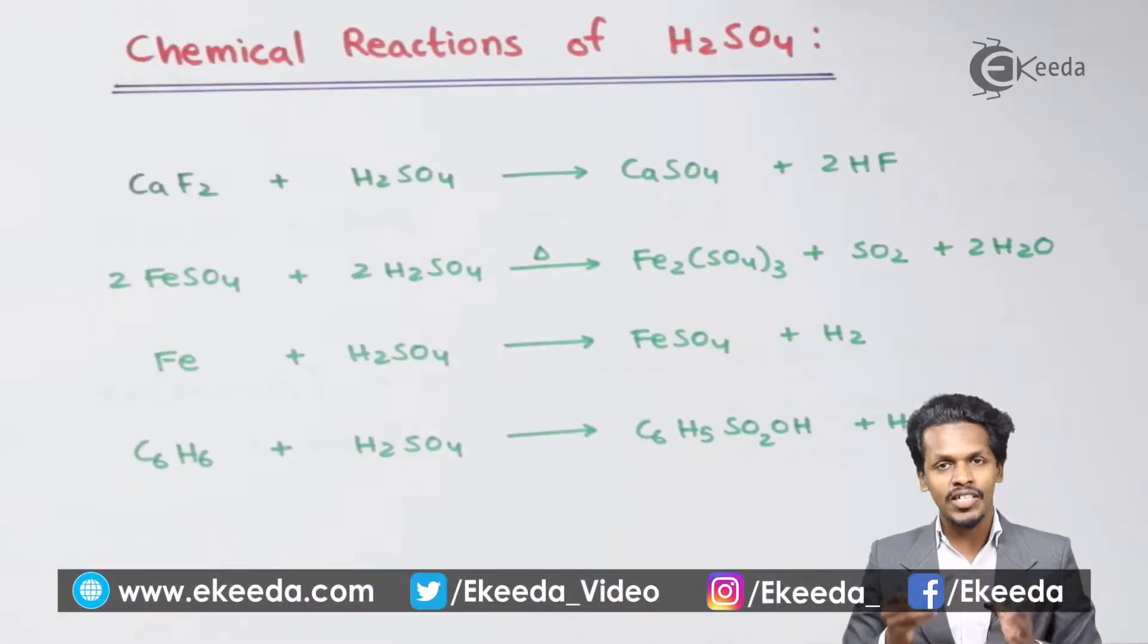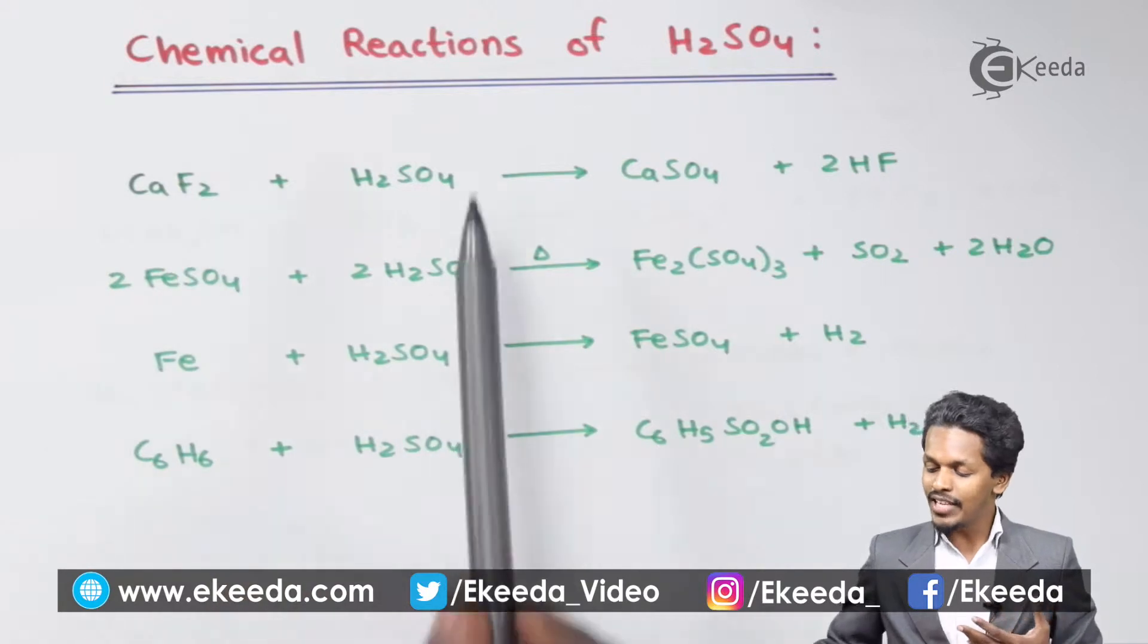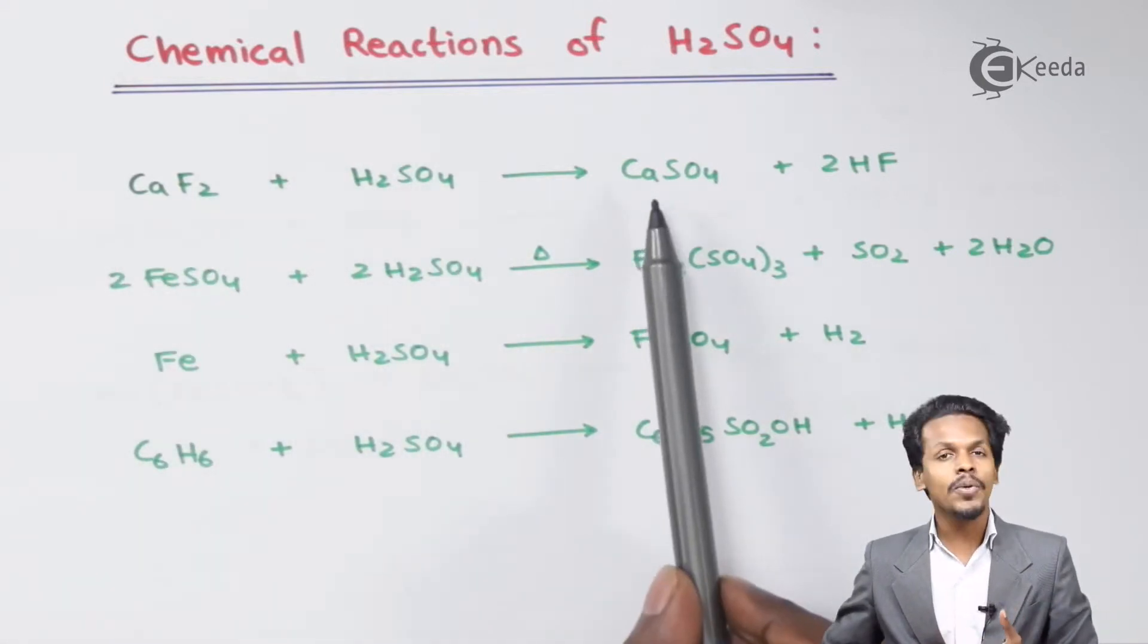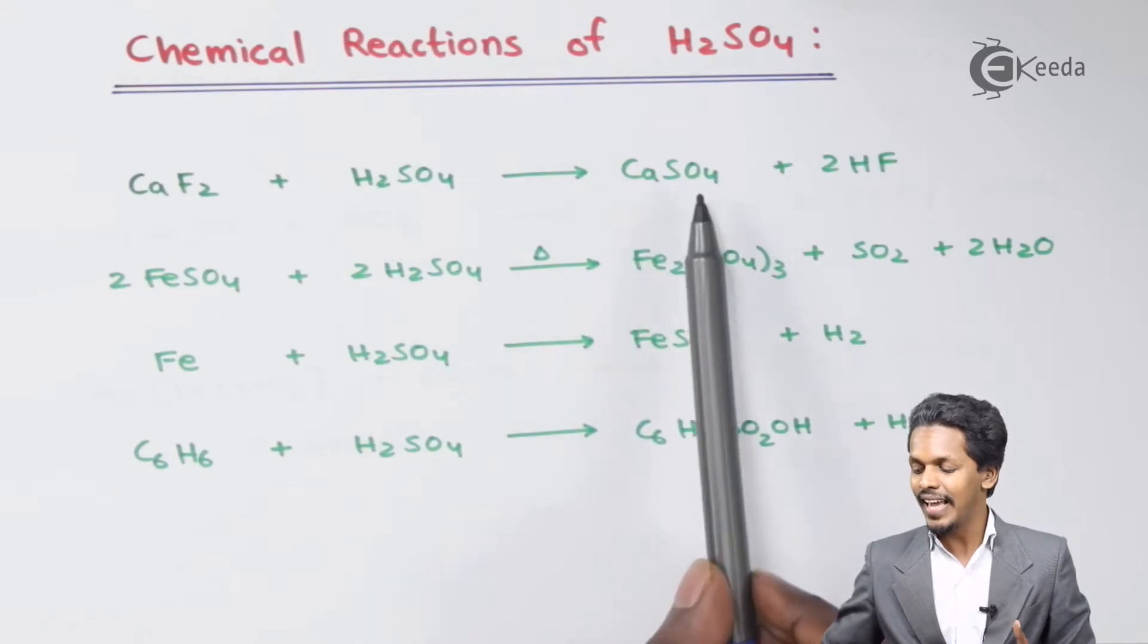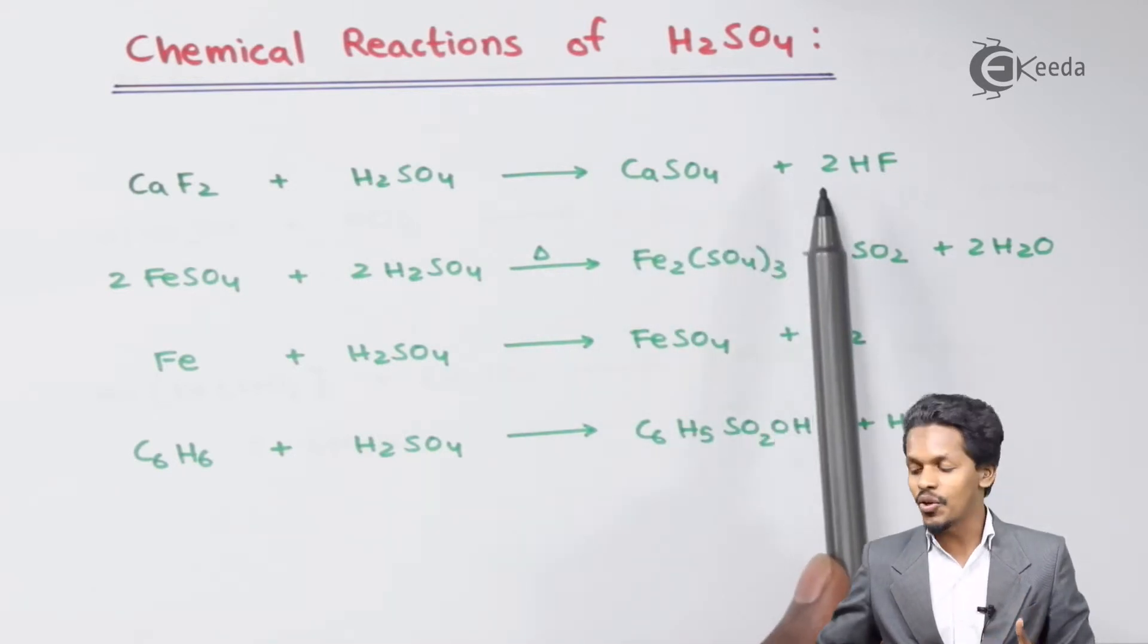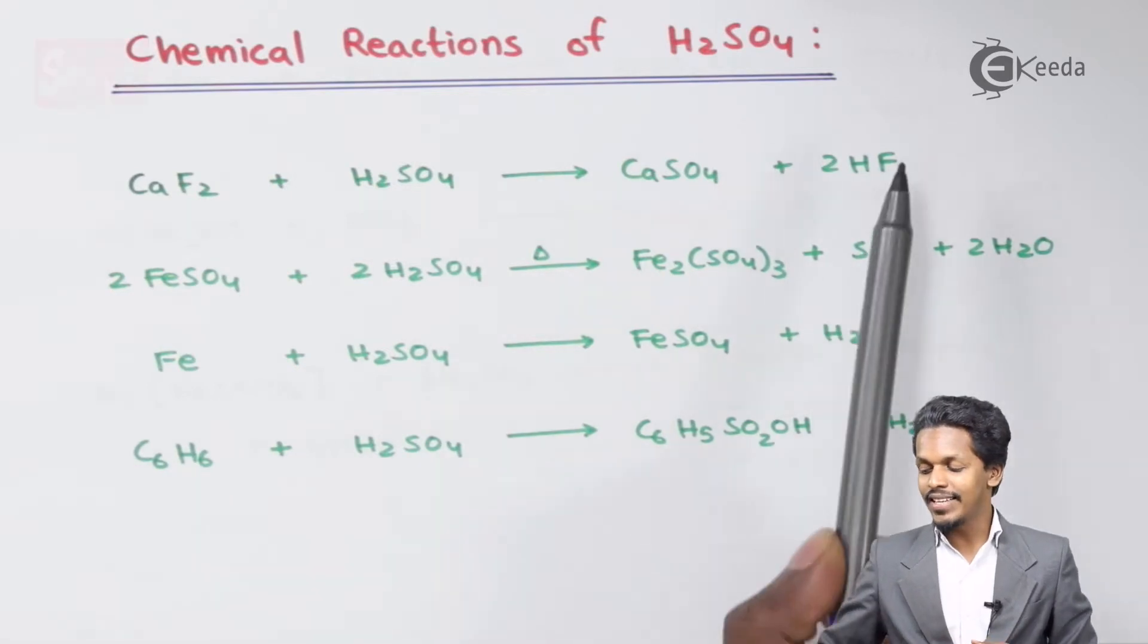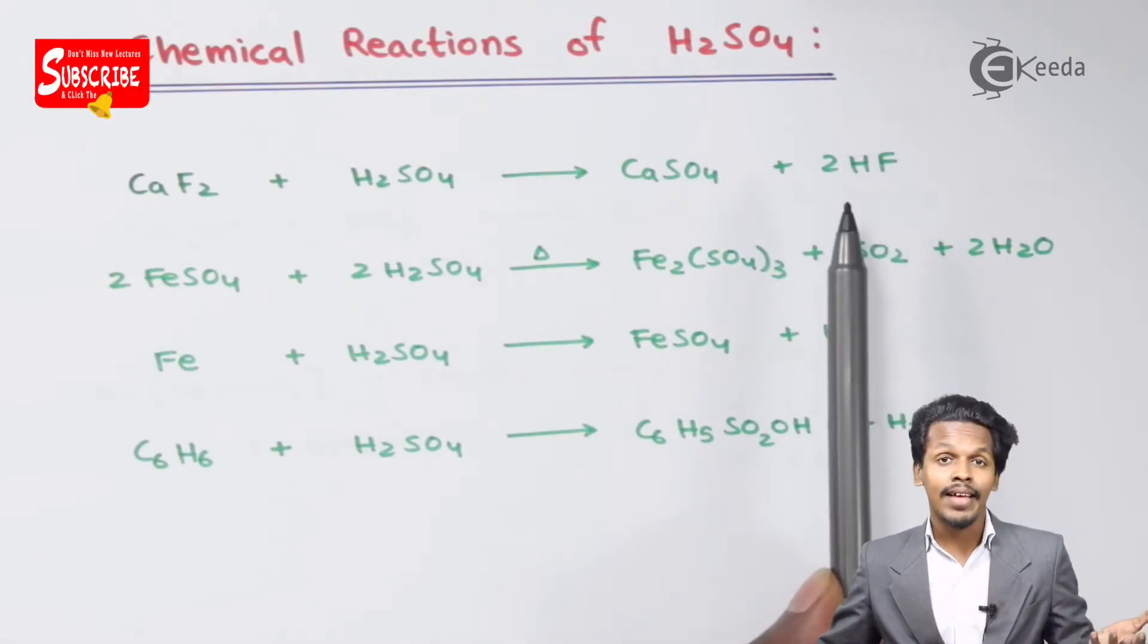So friends, here are those reactions. Let us start with the first one. The action of H2SO4 on CaF2, that is calcium fluoride, will result in the formation of calcium sulfate, CaSO4, along with the formation of 2 moles of HF, that is hydrofluoric acid. So here basically we can prepare a volatile acid.